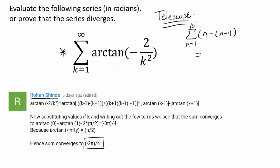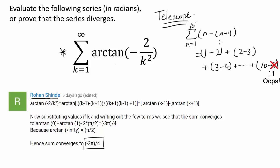Then when n equals 1, you get 1 minus 2; when n equals 2, you get 2 minus 3; when n equals 3, you get 3 minus 4, all the way to n equals 10, giving 10 minus 9. We quickly see that all the intermediate values cancel out: the minus 2 and plus 2 cancel, minus 3 and plus 3 cancel, and so on, leaving just 1 minus 10, or negative 9.